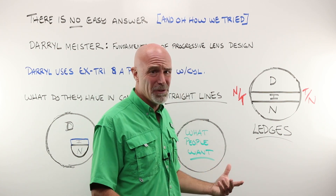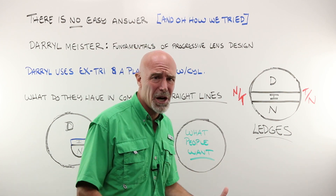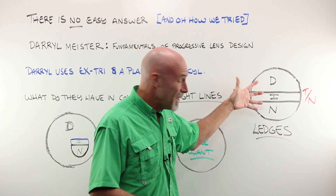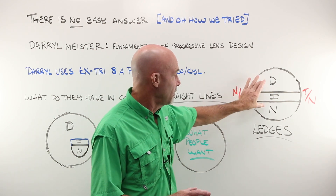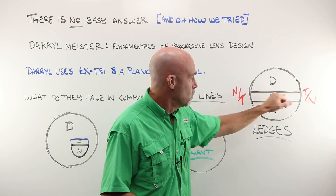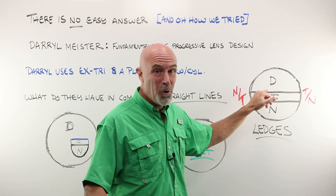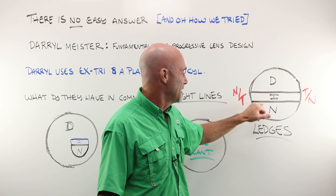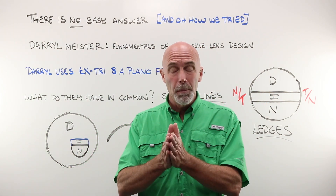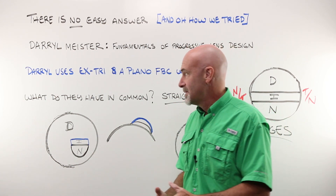Remember, a progressive lens is a compromise lens and a compromised lens. Nobody liked the look of the executive, so we went to segmented lenses — distance, intermediate, near for a straight top trifocal or straight top bifocal. What do you still have in common? A straight line dividing them. You can see them; there is a jump between them. I've taken my shallowest curve, added a steeper one, and a steeper one again for the bifocal and trifocal areas, leaving ledges, leaving lines, giving you that little bit of image jump.